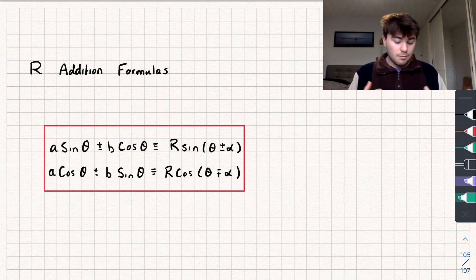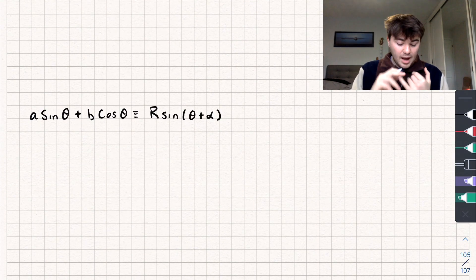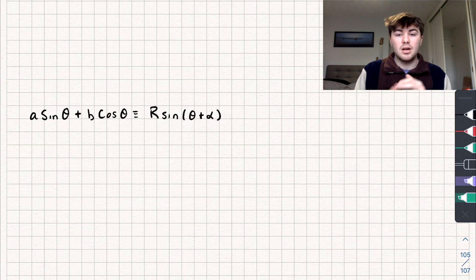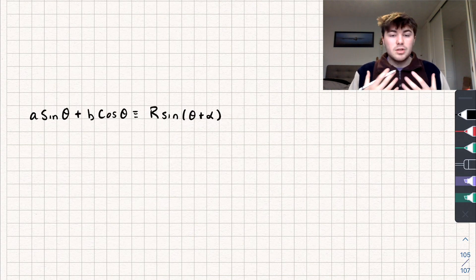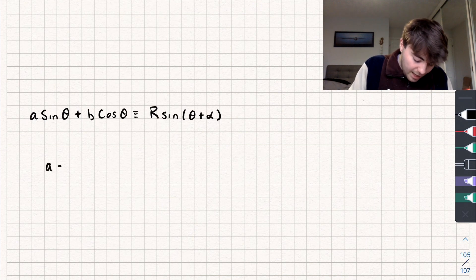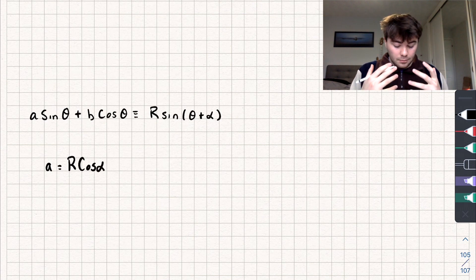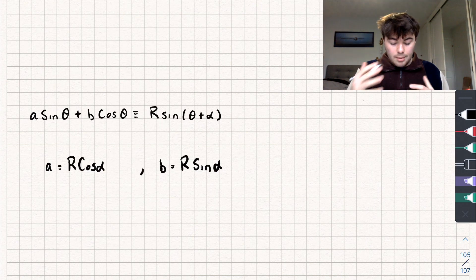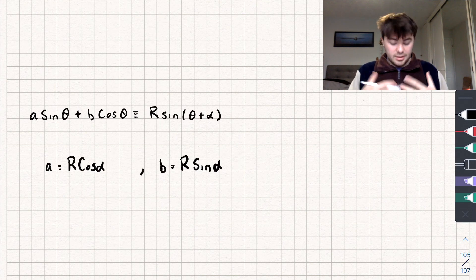Let's look at where these formulas come from. We start with A sine theta plus B cosine theta and we're going to show this is identical to R sine(theta + alpha). To do this, I'm going to represent A and B as: A equals R cosine alpha, and B equals R sine alpha, where R and alpha are the same in both expressions.